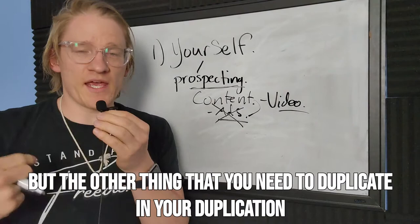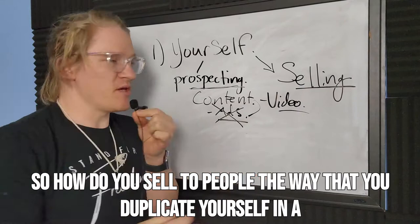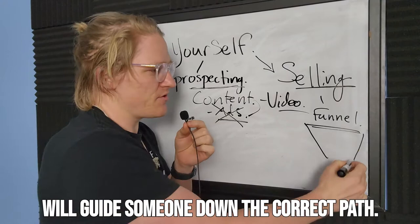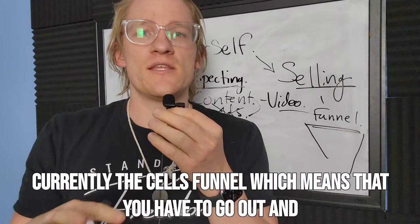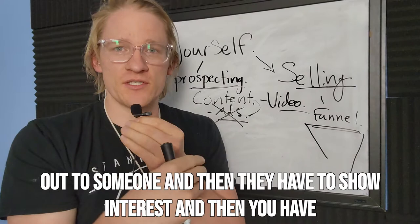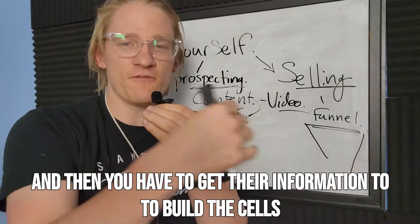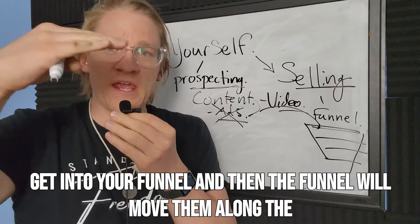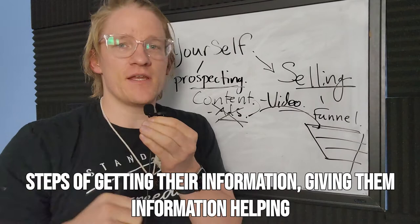The other thing you need to duplicate in your duplication system is selling. The way you duplicate yourself in a selling system is through a sales funnel. A sales funnel will guide someone down the correct path. Up to this point, if you don't have a sales funnel, you are currently the sales funnel — which means you have to reach out to someone, they show interest, you give them info, you follow up, and you collect their information. With a sales funnel, it does all that for you. The funnel moves people along the steps: collecting their information, giving them information, and helping them make a decision.